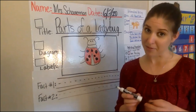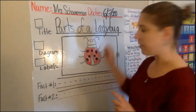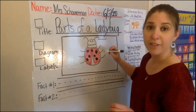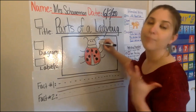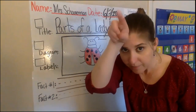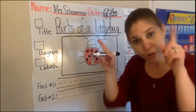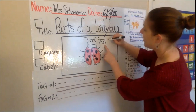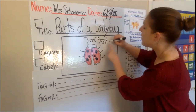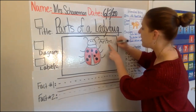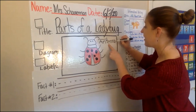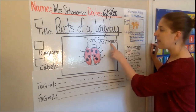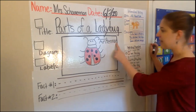Now it's time to add some labels. There were different parts of our ladybug that we heard about. We know that they have antennae, so let's draw a line from the antennae and label that first. Antennae — an antenna is just one; antennae is two, and they have two, so it's antennae. A-N-T-E-N-N-A-E. Antennae.